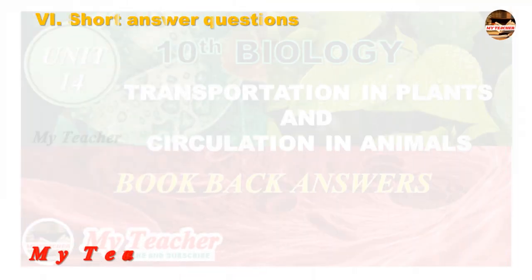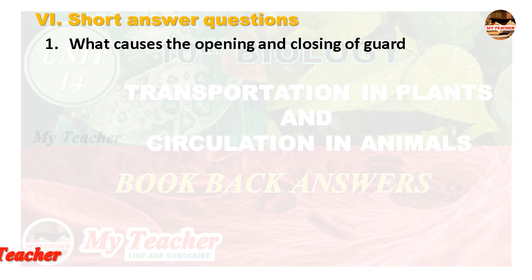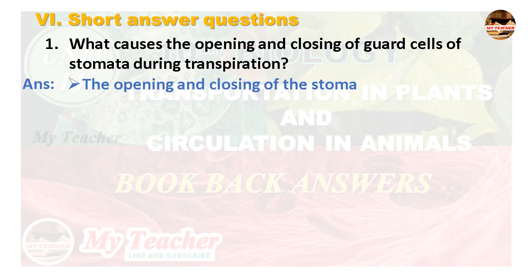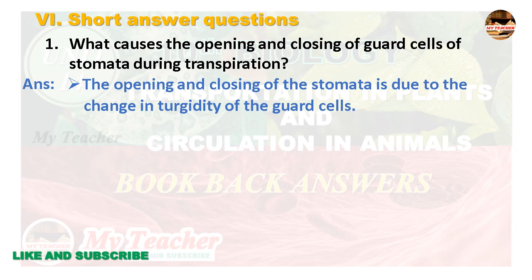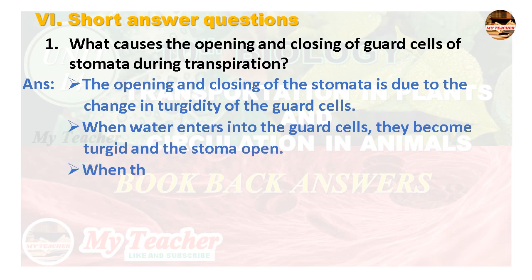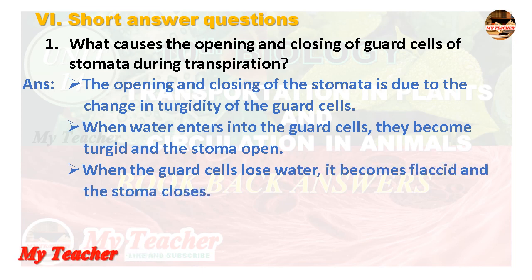Short answer questions. First: What causes the opening and closing of guard cells of stomata during transpiration? Answer: The opening and closing of the stomata is due to the change in turgidity of the guard cells. When water enters the guard cells they become turgid and the stomata opens. When the guard cells lose water they become flaccid and the stomata closes.